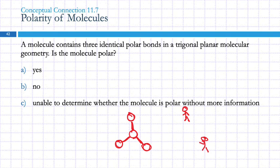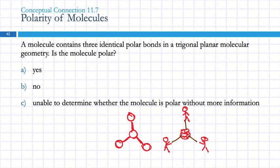Think of tug of war with three people all equally strong, all pulling on a big bag of candy. Is the bag going to move? No — because they are exactly opposing each other. That's vector addition: those three vectors add up to zero, so the molecule is not polar.